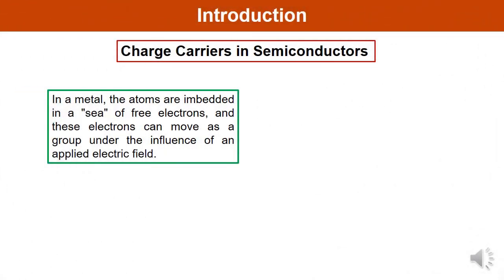What do you understand by charge carriers in semiconductors and how to define them? The overall mechanism of current conduction is easy to visualize in the case of metals. Metal atoms are embedded in a sea of relatively free electrons, and these electrons can move as a group under the influence of an applied electric field.